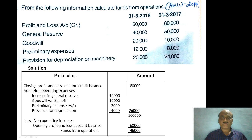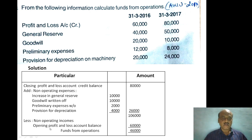The pro-forma for the calculation starts with the profit and loss account closing balance. Then we add non-operating and non-cash expenses. Next, we subtract non-operating incomes.